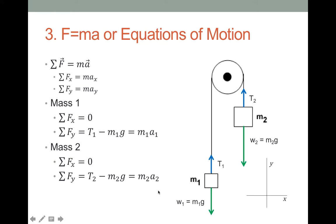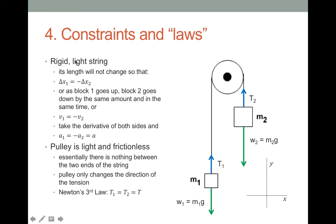Now that we have our equations of motion, we note we only really have two equations but four unknowns — two tensions and two accelerations. That is not a mathematically determined system, so we need two more equations. We'll consider the constraints on the problem. First, we have a light string that will not change its length. That means when one object moves up a certain distance, the other must move down the same distance in the same amount of time. Their velocities must be equal and opposite, and taking the derivative, their accelerations must also be equal and opposite. We'll call A1 = A, which makes A2 = −A.